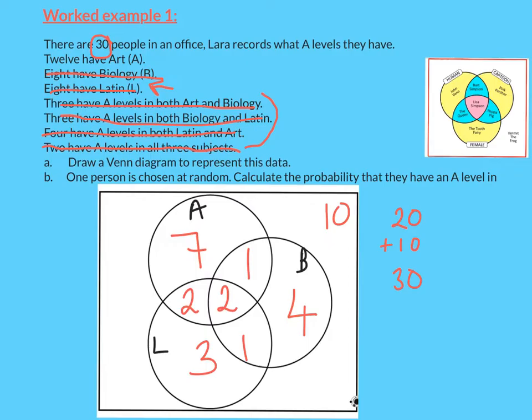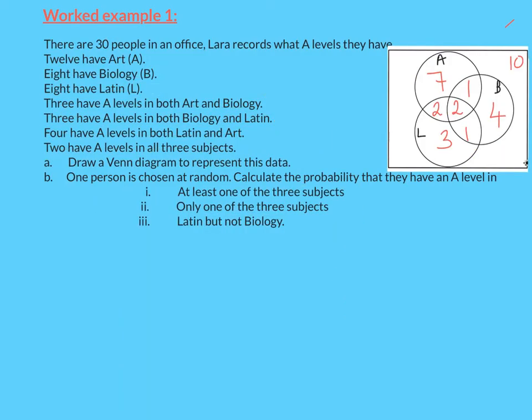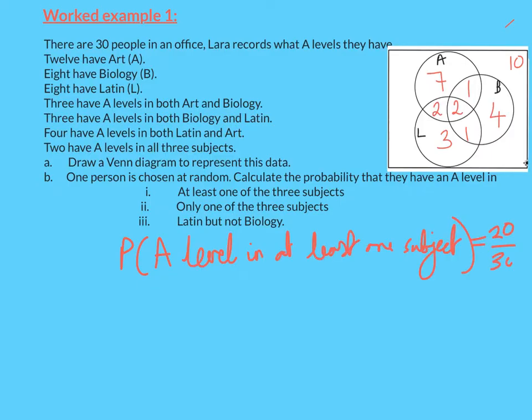So that's what it should look like, your Venn diagram. So I have now drawn my Venn diagram. One person is chosen at random. Calculate the probability they have an A-level in at least one of the three subjects. So it could be art or Latin or biology. Well, the easiest way of doing that is having a look at the fact there are 30 people altogether. 10 people don't have an A-level in everything, so 20 people must. So the probability of an A-level in at least one is 20 out of 30, two thirds.